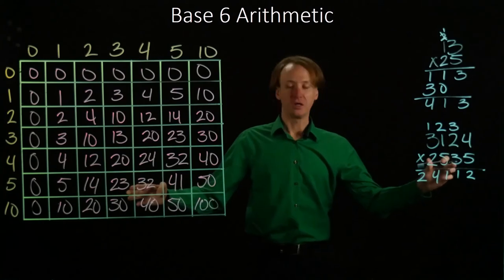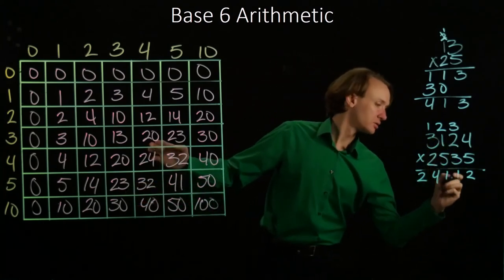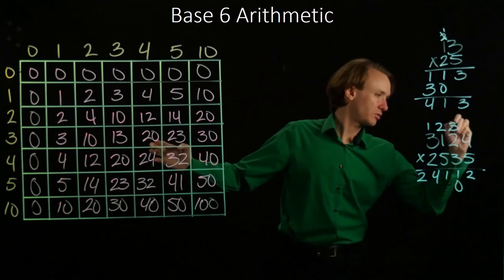Now I have 3. 3 times 4 is 20. So I'll write down the 0, carry a 2.